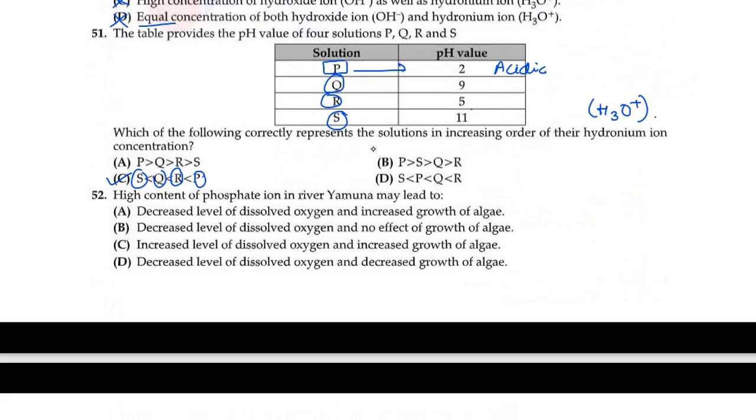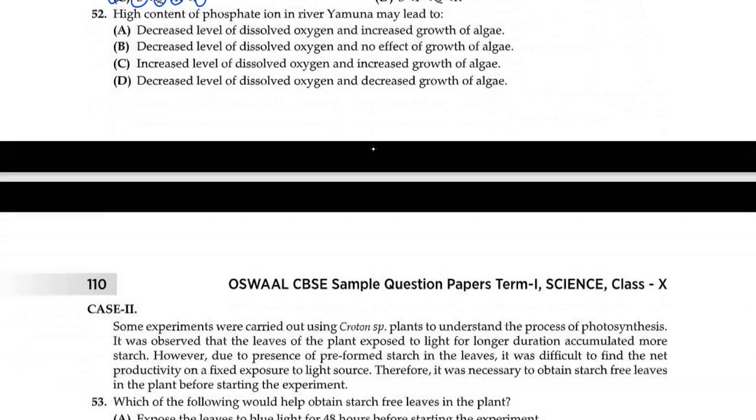Question 52: High content of phosphate ion in river Yamuna may lead to: decreased level of dissolved oxygen and increased growth of algae, or decreased level of dissolved oxygen and no effect on growth of algae. The first one seems correct to me. If dissolved oxygen decreases, the growth of algae increases. You must have seen that in stagnant water, algae starts appearing very quickly. So option A is correct in this case.